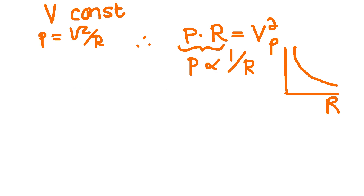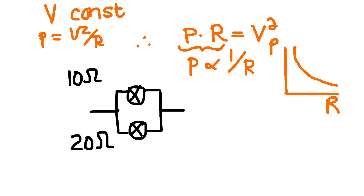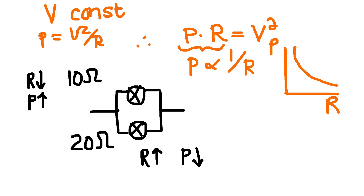Using light bulbs this time: two bulbs of 10 ohms and 20 ohms connected in parallel, so V is constant. The top light bulb has the lower resistance but via inverse proportion has the greater power. The bottom light bulb has the higher resistance but via inverse proportion has a smaller power. Since brightness and power are directly proportional, the bottom bulb would be dim compared to the lower-resistance bulb, which would be a lot brighter.